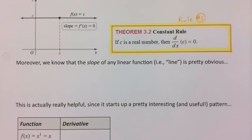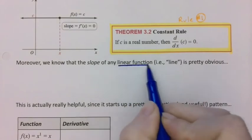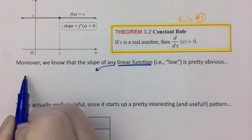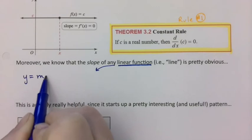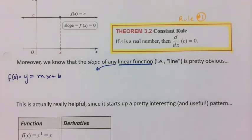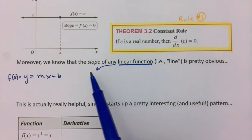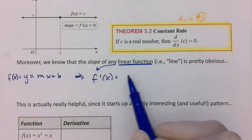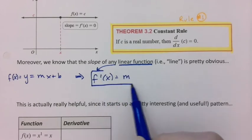So now let's learn the slope of any linear function. A linear function would be y equals mx plus b. That would be your function f of x. So if that's your f of x, what is the derivative going to be? Well, the derivative is the slope, the slope of the function. So that means that the derivative, f prime of x, would be equal to m, whatever m may be.